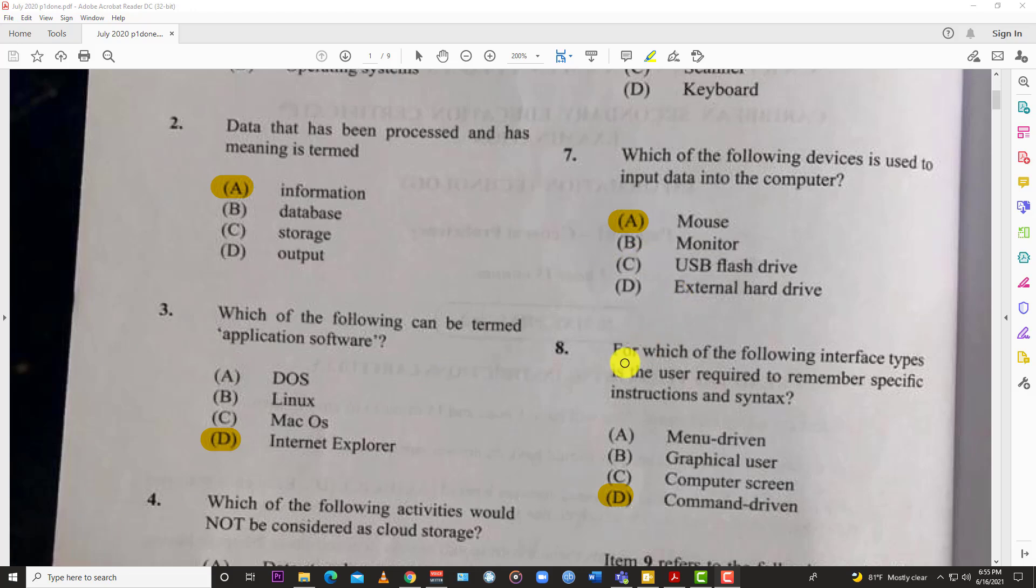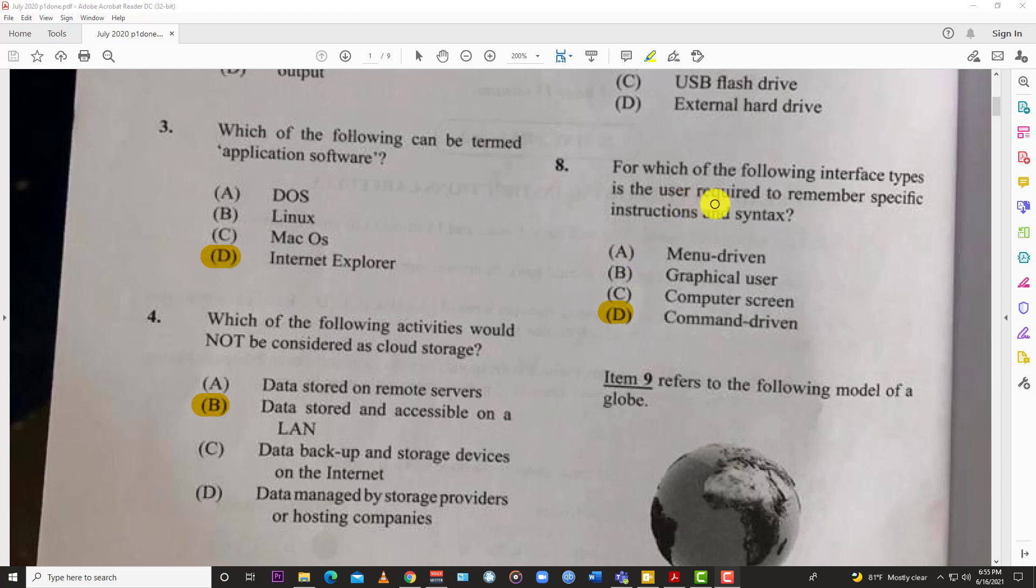Number eight: for which of the following interface types is the user required to remember specific instructions and syntax? The best answer is D, command driven. That's like the old school way of doing things - you open command prompt and start typing. Back in DOS and those kind of things you had to type in commands. That was Linux for a while too - command driven, as opposed to having icons to click on. You want to access hardware, you type in access slash backup, that kind of thing.